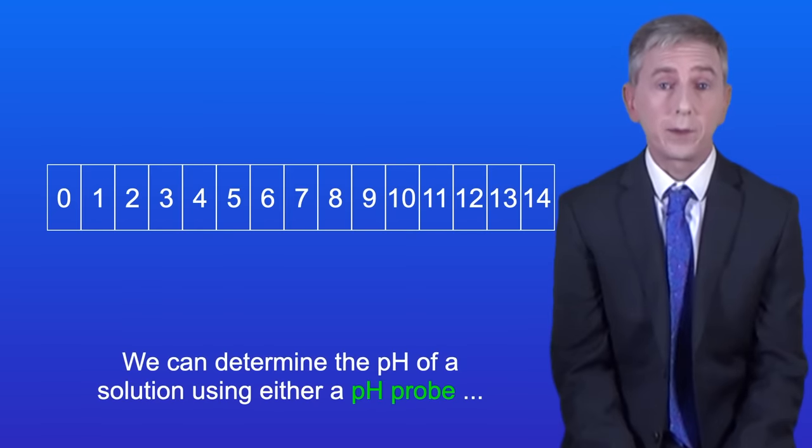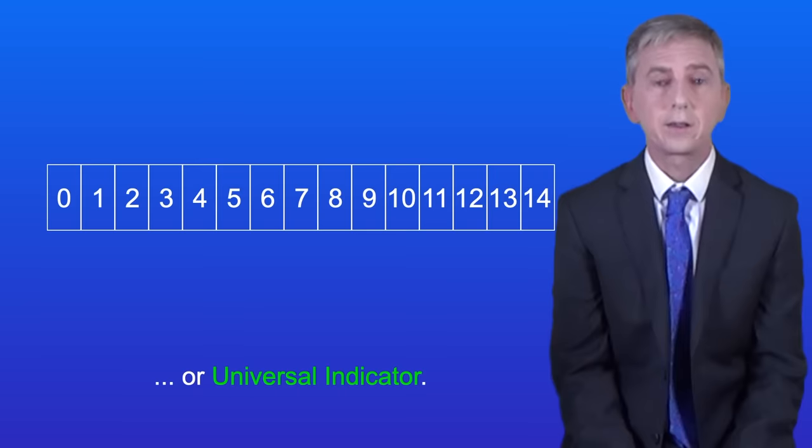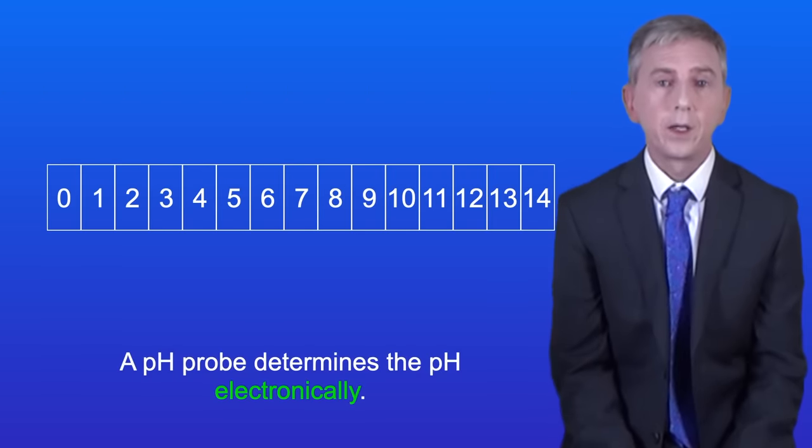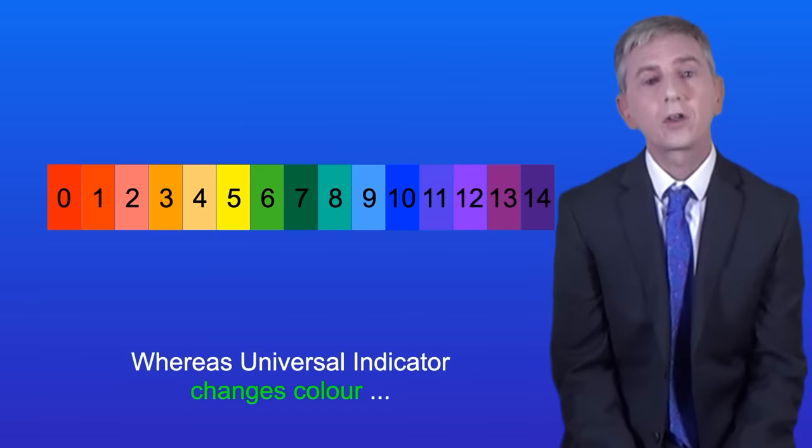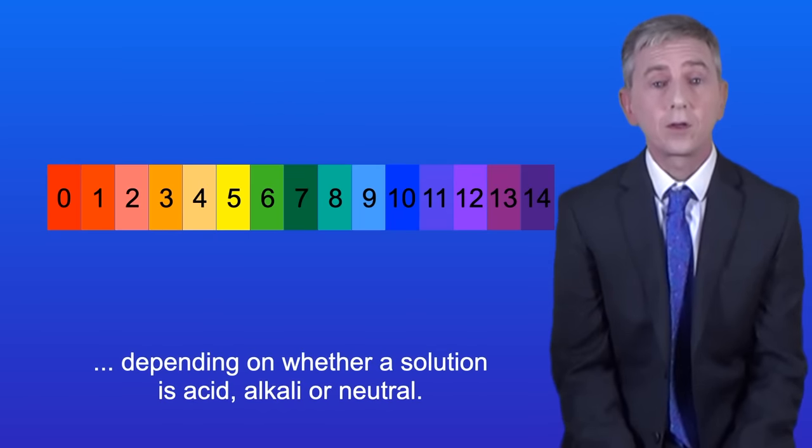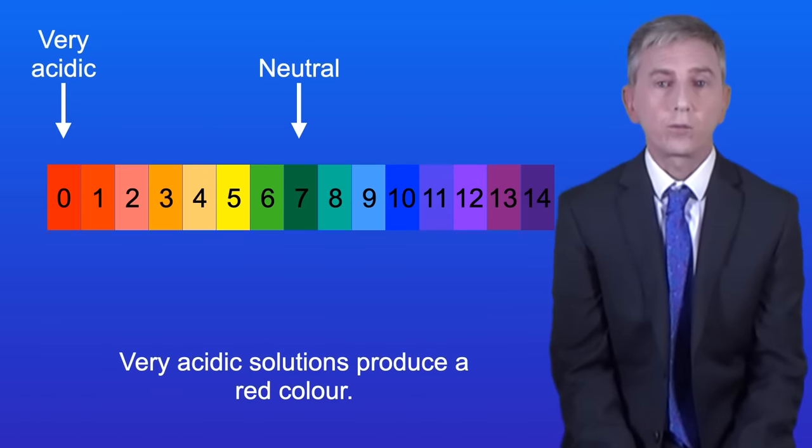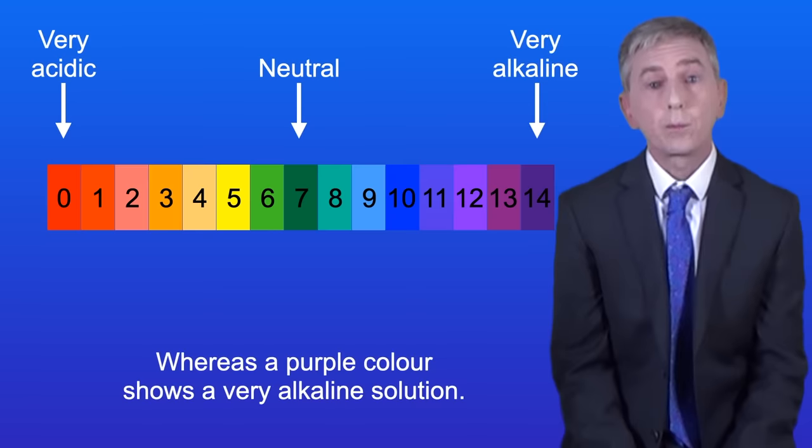Now we can determine the pH of a solution using either a pH probe or universal indicator. A pH probe determines the pH electronically whereas universal indicator changes color depending on whether a solution is acid, alkali or neutral. Green shows a neutral solution, in other words pH 7. Very acidic solutions produce a red color whereas a purple color shows a very alkaline solution.